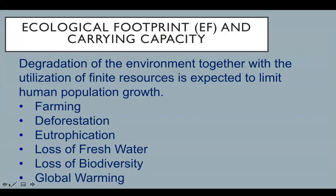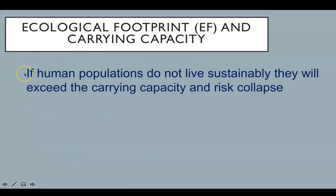Degradation of the environment together with the utilization of finite resources is expected to limit human population growth. By now in this course, you are familiar with the impacts of farming, deforestation, eutrophication, loss of freshwater, loss of biodiversity, and global warming — all anthropogenic results from our presence on Earth. Needless to say, if human populations do not live sustainably, they will exceed the carrying capacity and risk collapse.